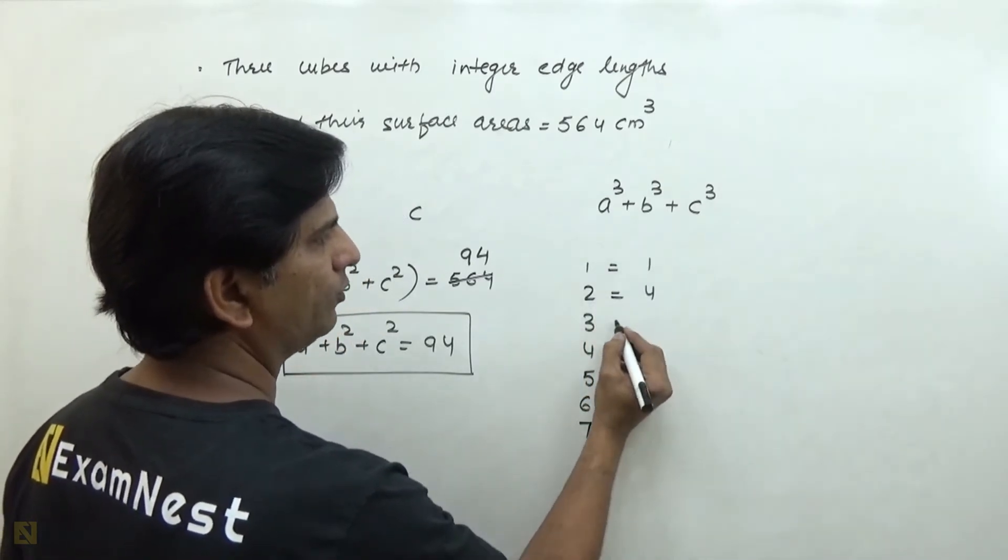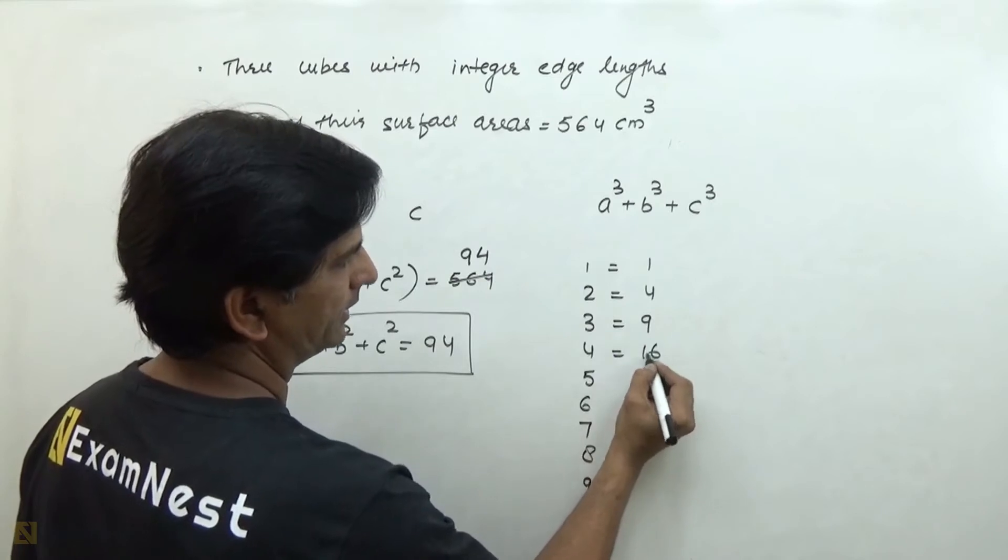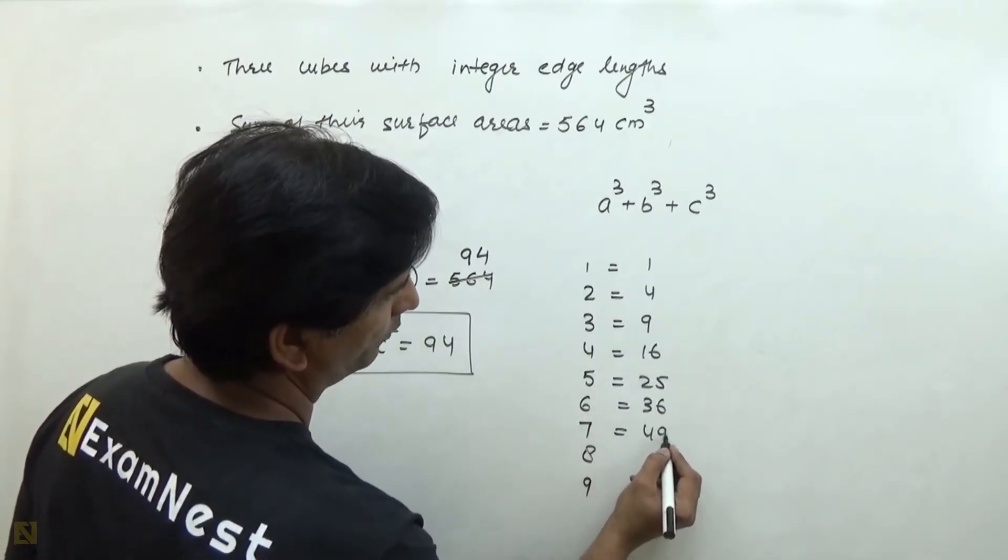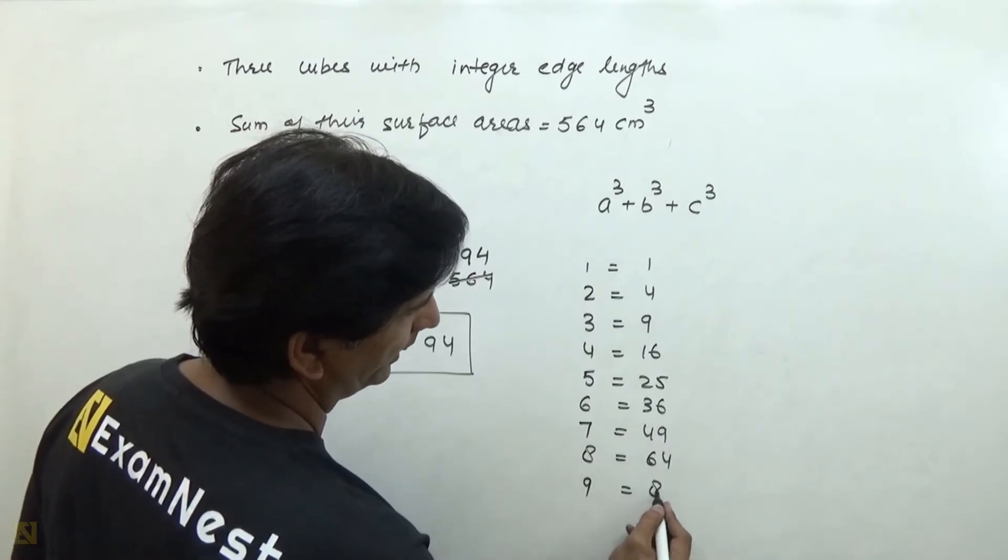1 squared is 1, 2 squared is 4, 3 squared is 9, then 16, 25, 36, 49, 64, and 81.